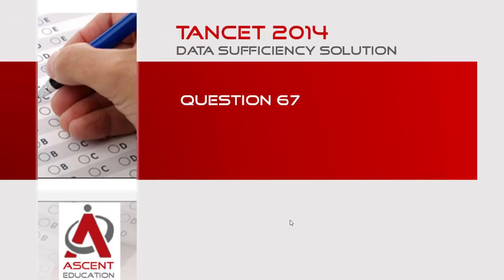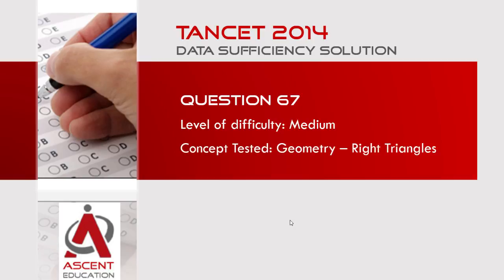This data sufficiency question appeared in TANCET 2014 MBA, question number 67. This is a medium level difficulty question. There are some concepts in geometry learning. Right triangles is a concept that is tested.